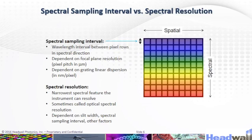Here we have spectral sampling interval versus spectral resolution. The SSI is a parameter related to geometric spacing, dispersion, etc. Optical spectral resolution is usually broader than SSI. For example, a 20 micrometer slit and 6.5 micrometer pixel pitch gives a ratio of approximately 3 — that means the spectral resolution is approximately 3 times the SSI, plus a little more because of other factors.